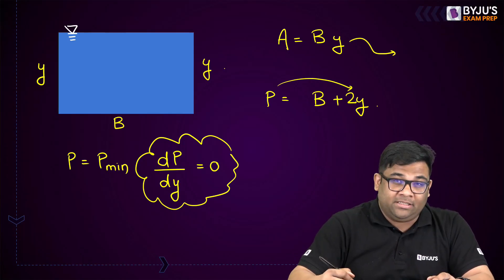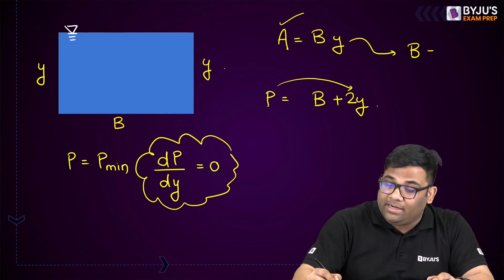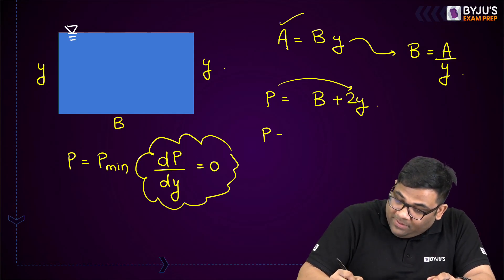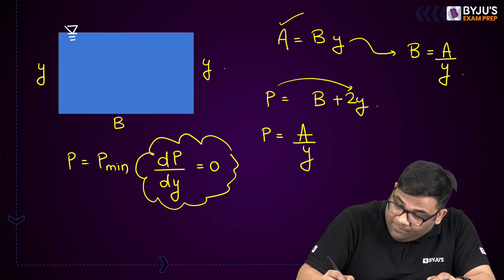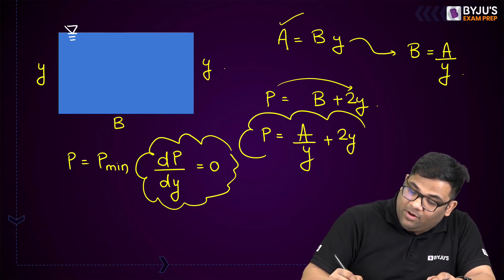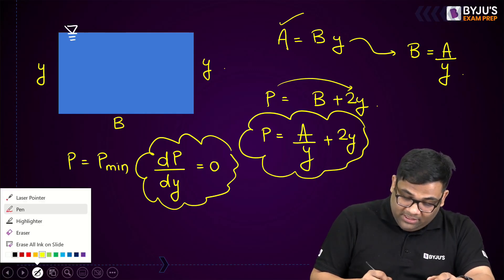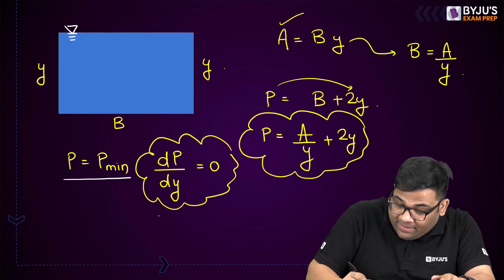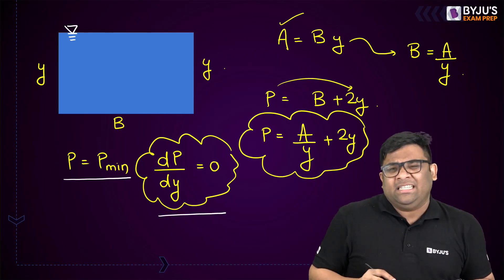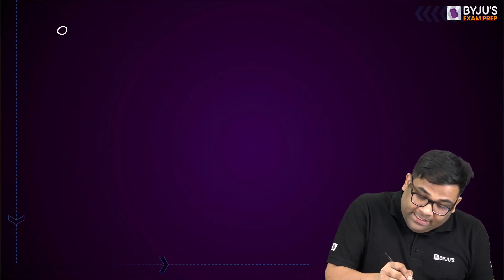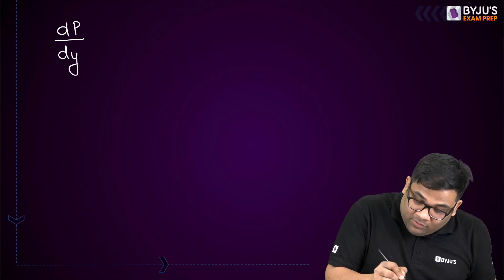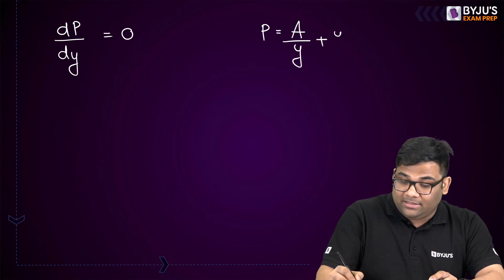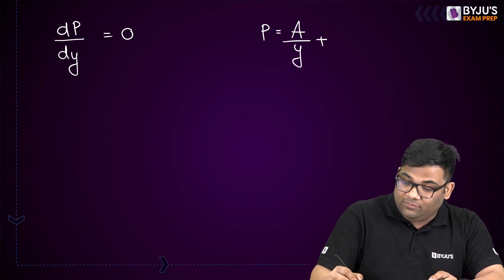Since area is constant, I can write b = A/y. So the expression for wetted perimeter becomes P = A/y + 2y. For the hydraulic efficient section, the wetted perimeter has to be minimum, so dp/dy = 0. Let me differentiate P = A/y + 2y.